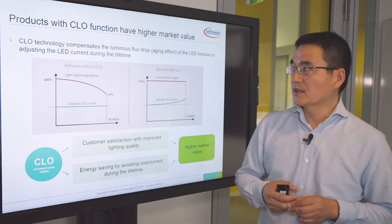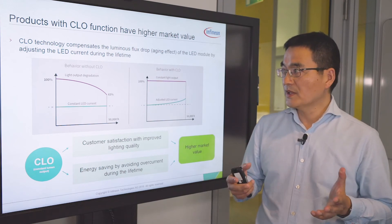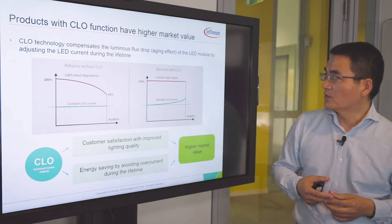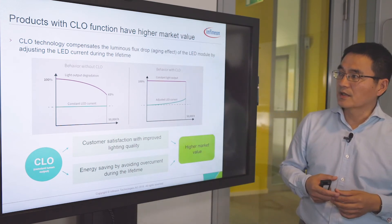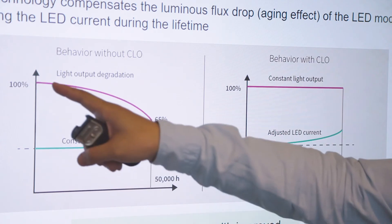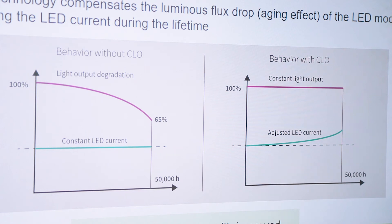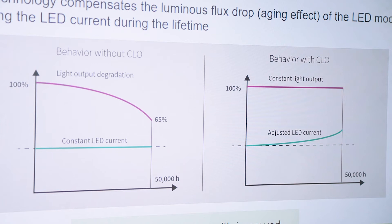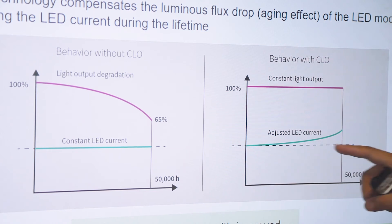Another topic is the CLO function. CLO basically compensates for the light degradation of the LED module by adjusting the LED current during its lifetime. Naturally, LEDs always have a degradation issue. The right approach is to increase the LED current during the lifetime to compensate for the light drop. In this way, we can achieve constant light output during the lifetime — this is the so-called CLO function.